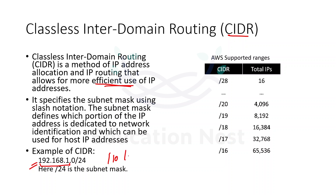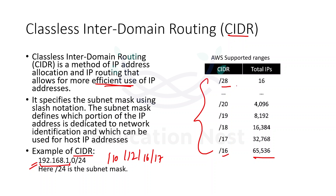It can be slash 10, slash 12, slash 16, 17, 18 — whatever you want. We can have it in CIDR blocks. But for AWS, these are the supported CIDR ranges. You can go from slash 16, which is the largest network we can have, with 65,536 hosts inside it. The smallest network that we can have on AWS is slash 28, meaning 28 bits represent the network part.